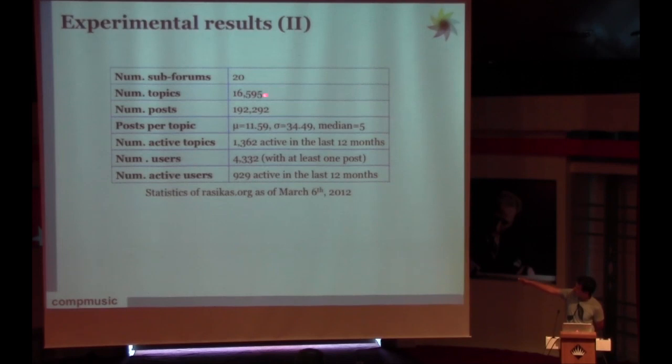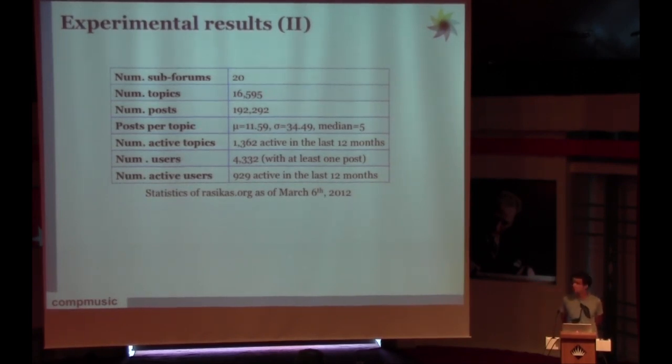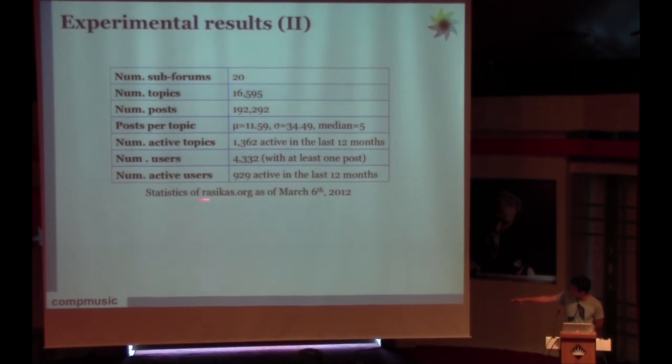As you can see here, even though there are 16,000 topics, only 1,300 have been active in the last 12 months, which means only 1,300 have had at least 5 posts in the last 12 months. Also it happens with users, even though there are 4,000 users, only 1,000 of them have been active in the last 12 months. Please consider that these statistics were gathered in March 6th.